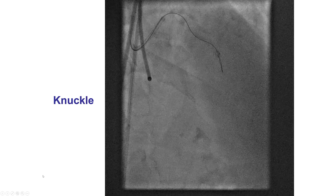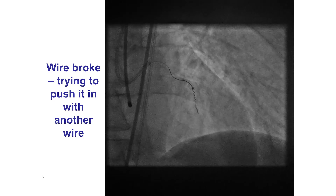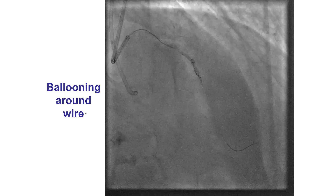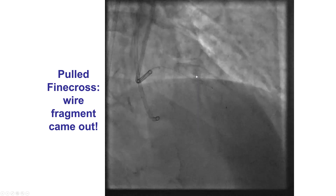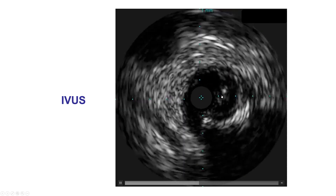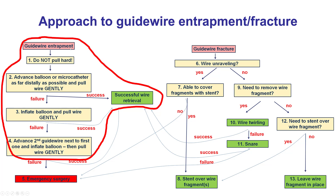The second case involved a patient with an LAD CTO. An antegrade technique was used with a knuckle Filter XT wire, which unfortunately became stuck in the coronary artery. Several retrieval attempts were unsuccessful. Eventually, we were able to cross the CTO with another wire, balloon around the area of entrapment, and successfully remove the guidewire fragment — which was very deformed, as shown. IVUS was performed to confirm no wire fragments remained, and a nice final result was achieved. In contrast to the first case, we did not pull hard; instead, we used a second guidewire and balloon next to the entrapped wire and pulled gently.